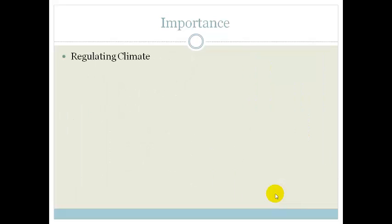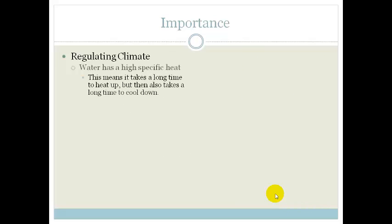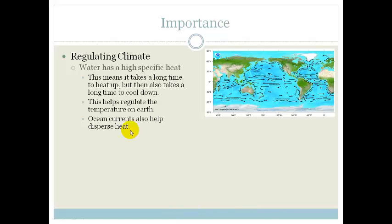Water also helps regulate climate. It has a high specific heat, which means it holds onto heat for a very long time. It takes a long time to heat up, but then also takes a long time to cool down. This helps regulate the temperature on Earth. Ocean currents also help disperse heat. You can see the different types of currents. On the eastern side of Africa, we've got the warm Mozambique current, and on the western side, the cold Benguela current.